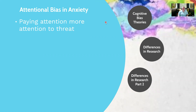So let's talk about attentional bias and anxiety. Attentional bias in brief is basically the concept that someone is going to pay more attention to certain information than other information. In anxiety in particular, it is thought that people with anxiety are going to pay more attention more quickly and possibly have more trouble disengaging from information that is threatening.